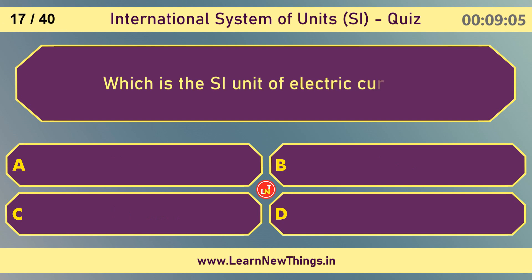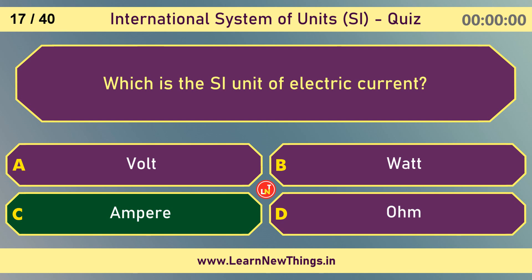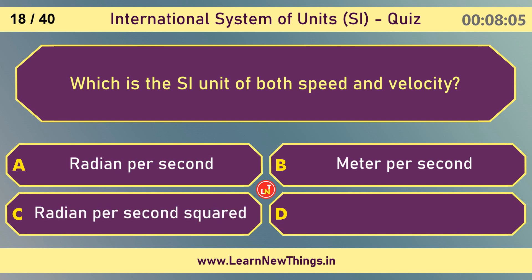Which is the SI unit of electric current? Ampere. Which is the SI unit of both speed and velocity? Meter per second.